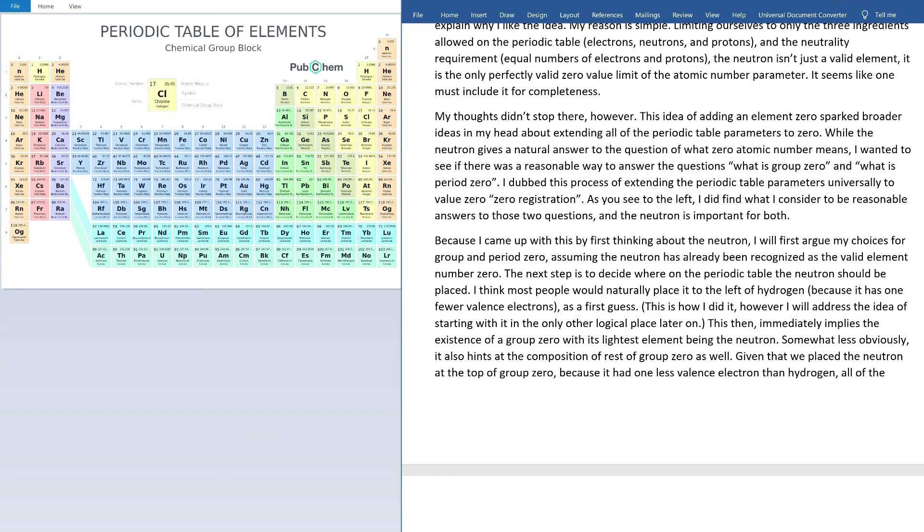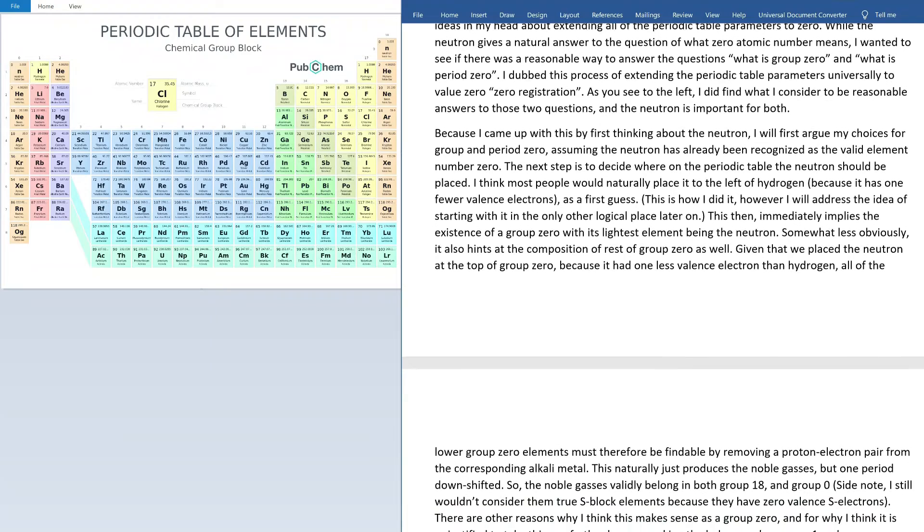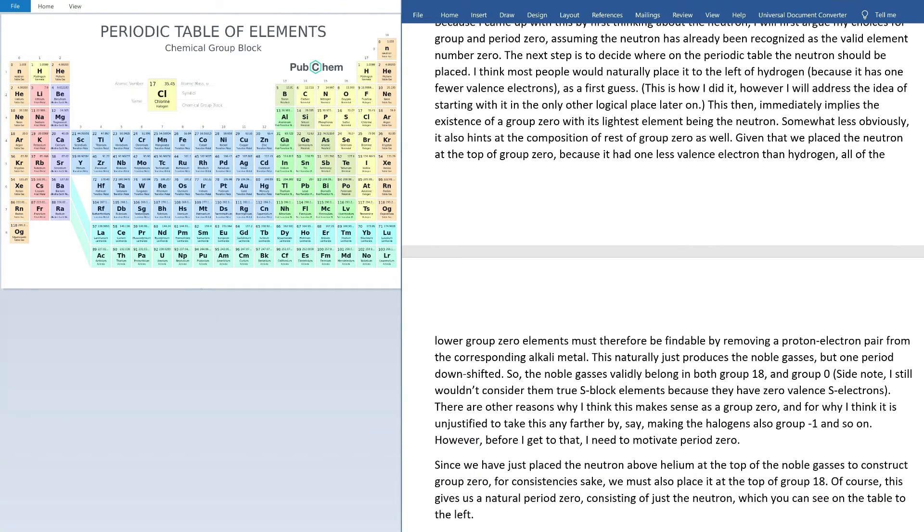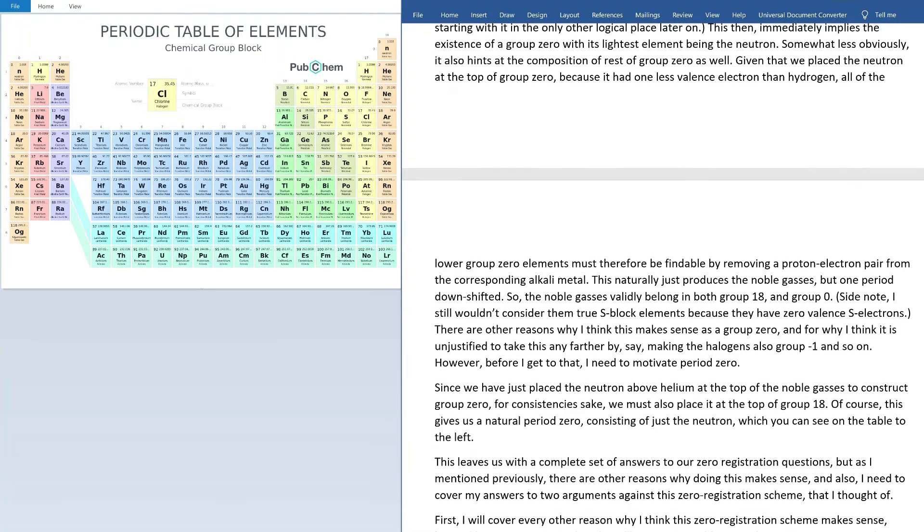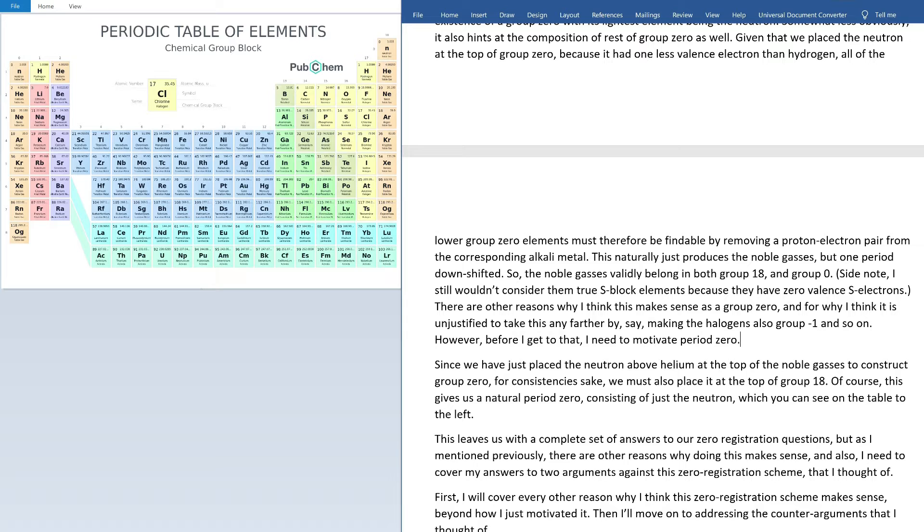Because I came up with this by first thinking about the neutron, I will first argue my choices for group and period zero, assuming the neutron has already been recognized as the valid element number zero. The next step is to decide where on the periodic table the neutron should be placed. I think most people would naturally place it to the left of hydrogen, because it has one fewer valence electrons as a first guess. This is how I did it, however, I will address the idea of starting with it in the only other logical place later on. This then immediately implies the existence of a group zero with its lightest element being the neutron. Somewhat less obviously, it also hints at the composition of the rest of group zero as well.